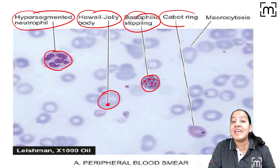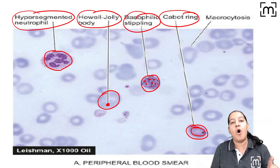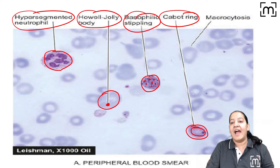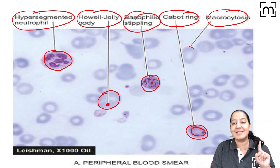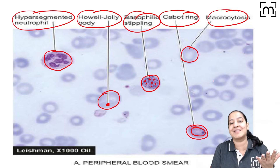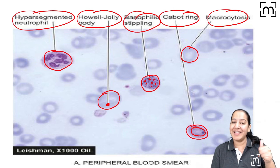The fourth is the Cabot ring. It is a strand either in the shape of a loop or in the shape of a figure of 8. And the last one is macrocytosis. You can see the size of the RBC is larger compared to normal and the MCV is increased.